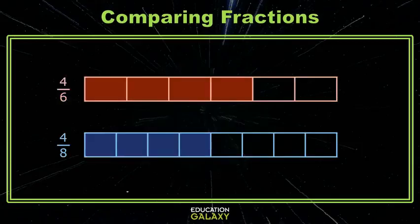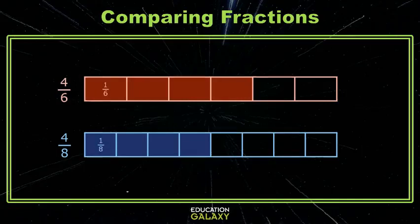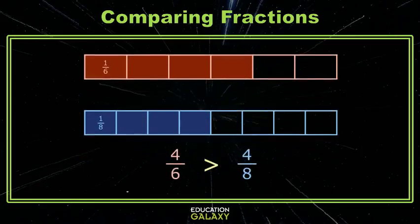Let's look at an example. Here I have two fraction strips, both separated into equal size parts. But the top one is 6 equal size parts, and the bottom one is 8 equal size parts, and they both have 4 pieces shaded. Notice that the sixth is bigger than the eighth, and 4 of those sixths is greater than 4 of those eighths. Let's look at one more example.